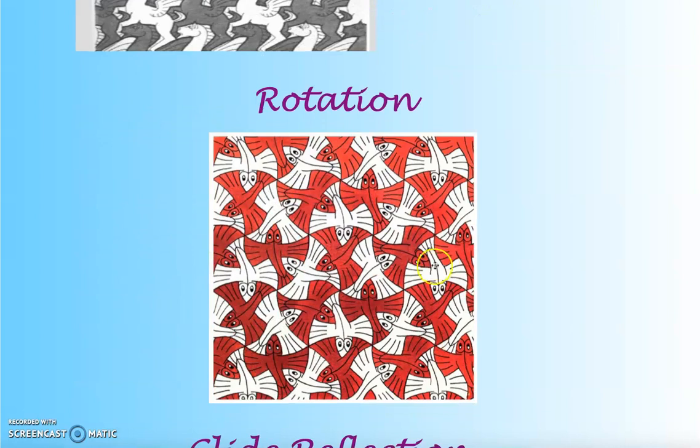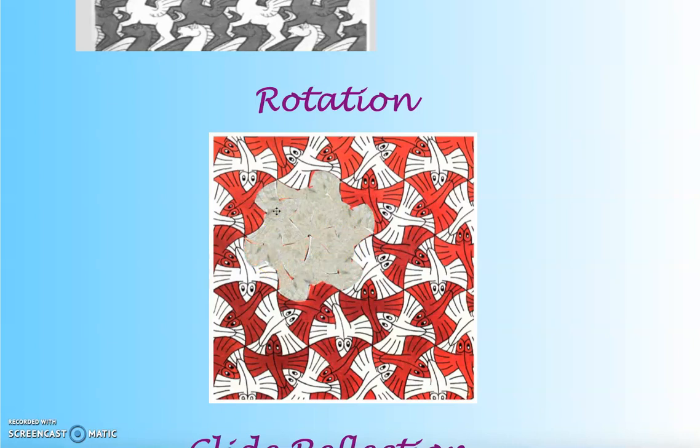A rotation tessellation. Notice, to go from this red fish to this white fish, we're going to rotate about 60 degrees, and from this white fish to this red fish, we rotate, and these fish rotate around to go from one to the next. Watch. This fish rotates 60 degrees to that fish, which rotates to that fish, which rotates all the way around, completely covering this plane.